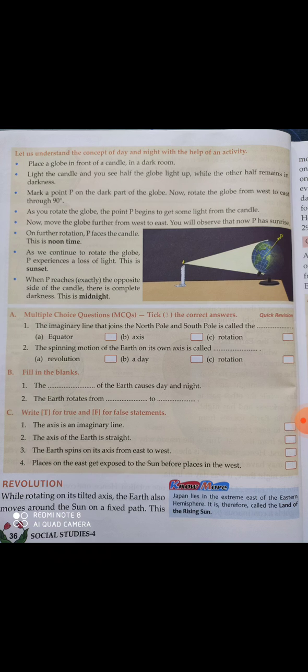Before rotating, what we have to do is mark a point P anywhere in the middle of the globe — you can write anything. So here we have written P in the middle of the globe. As you rotate the globe, the point P begins to get some light from the candle. So when you slowly start rotating the globe, the point P will gradually start receiving light.